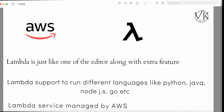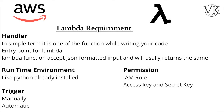Let's understand the requirements to run our code. The first requirement is the handler — in simple terms it is an entry point for Lambda. We need to start our function with the handler, which is just a function. Lambda accepts JSON as input and the output is also most of the time in JSON format by default. We also need the runtime environment — for example, if I am running Python code, Python is the runtime environment.